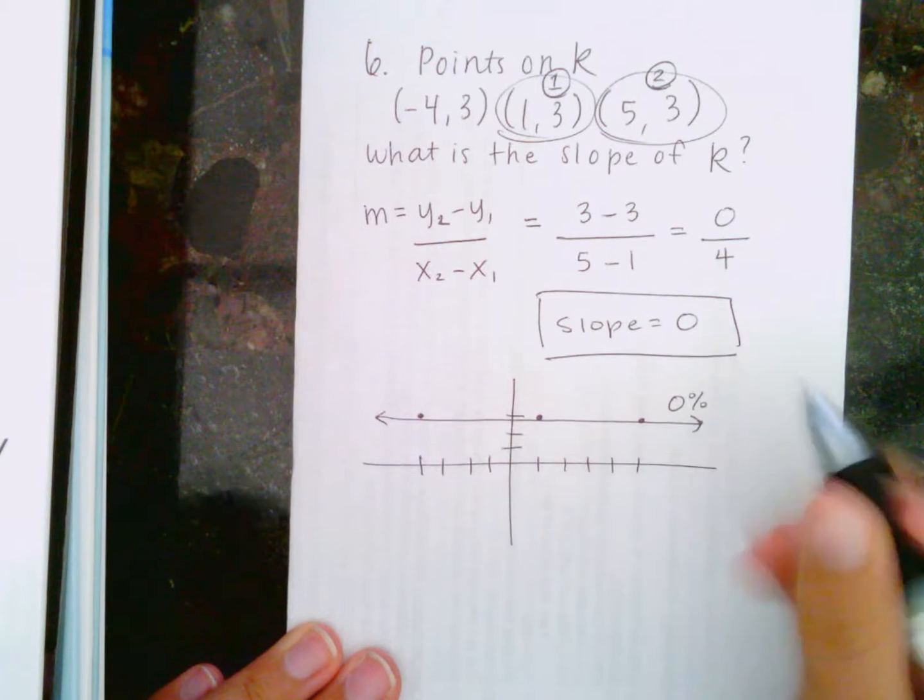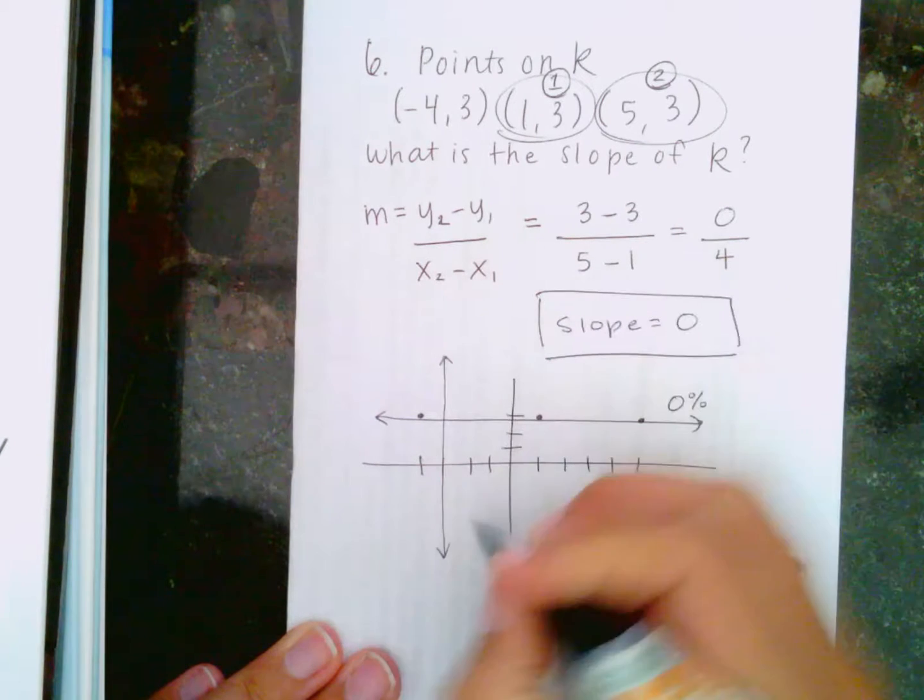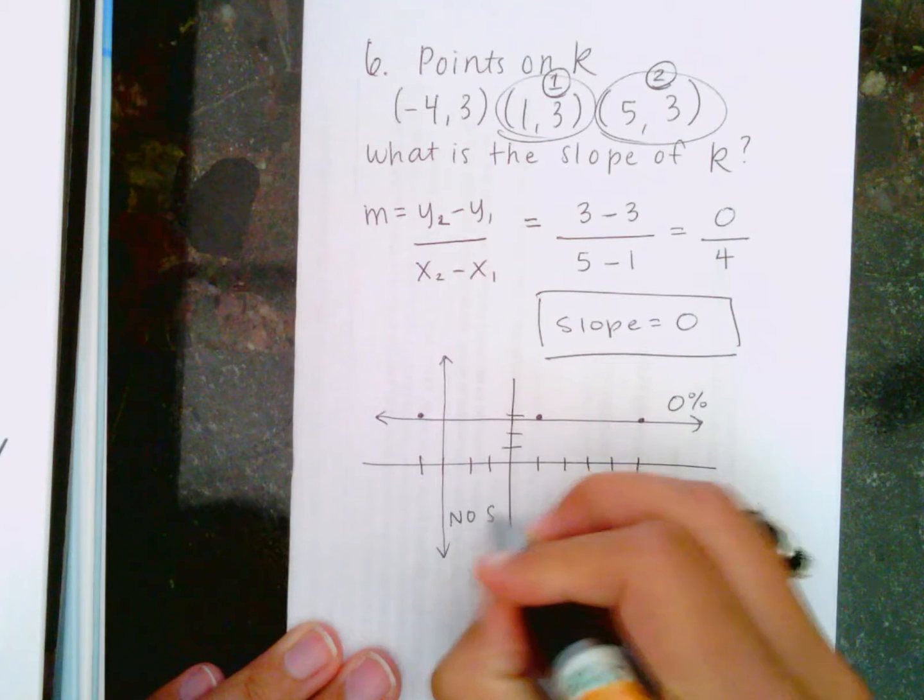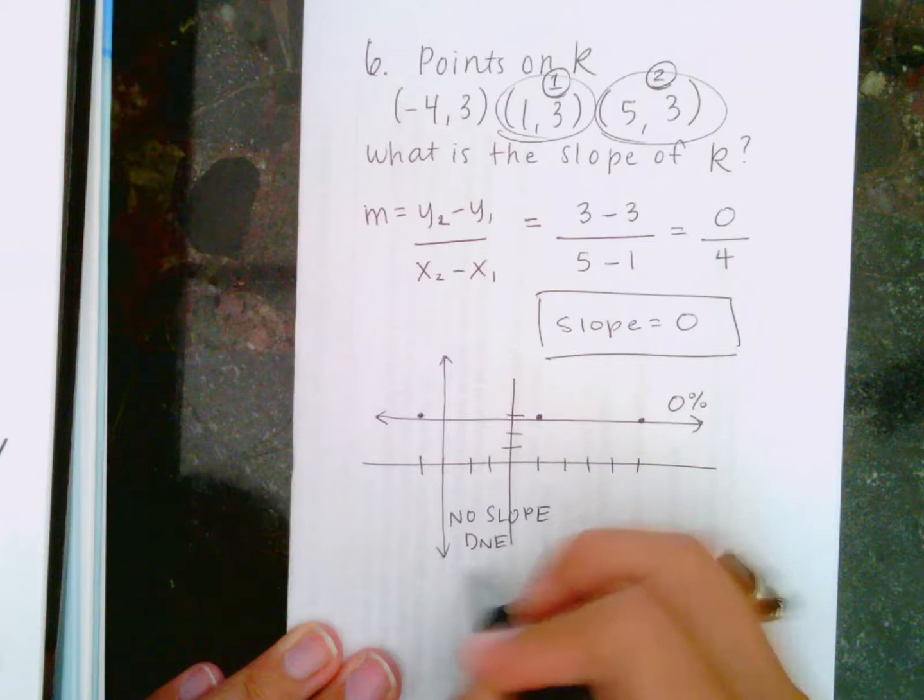Not to be confused with up and down lines. Like, for example, if we had a line doing this right here, there is no slope here in this line. It does not exist, or you could say undefined.